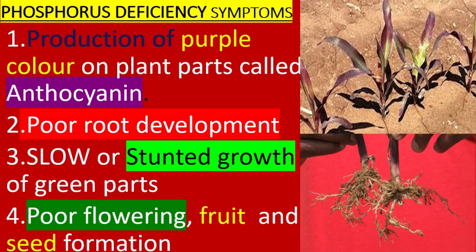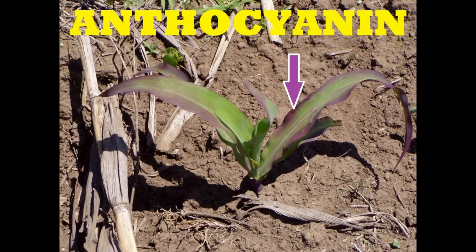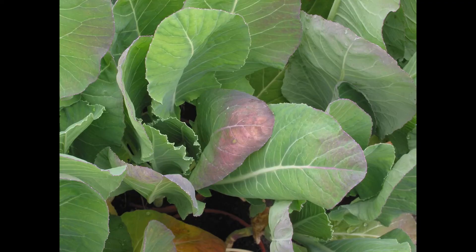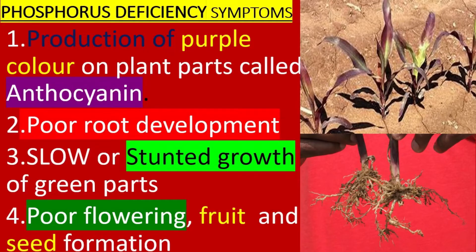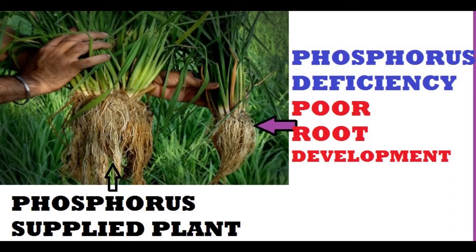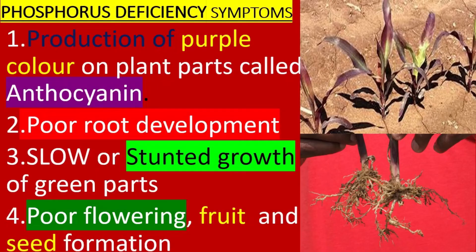Symptoms of phosphorus deficiency include: one, production of purple color on plant parts, called anthocyanin; two, poor root development; and three, stunted growth of the plants.